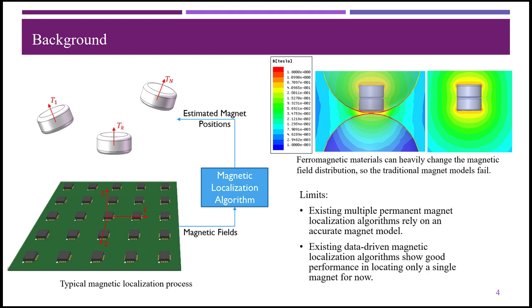Some data-driven magnetic localization algorithms have shown good performance in locating single targets. We hope to locate multiple magnets by data-driven algorithm under ferromagnetic environments.